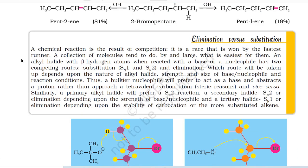Elimination vs. substitution: A chemical reaction is the result of competition — molecules tend to do what is easiest. An alkyl halide with β-hydrogen atoms, when reacted with a base or nucleophile, has two competing routes: substitution (SN1 and SN2) and elimination. Which route is taken depends on the nature of the alkyl halide, strength and size of the base/nucleophile, and reaction conditions. A bulkier nucleophile will prefer to act as a base and abstract a proton rather than approach a tetravalent carbon. A primary alkyl halide prefers SN2; a secondary halide may undergo SN2 or elimination; a tertiary halide undergoes SN1 or elimination.